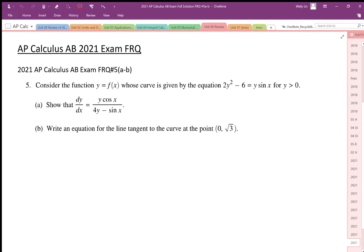Problem 5a from the 2021 exam says consider the function y equals f of x whose curve is given by the equation 2y squared minus 6 equals y sine x for y greater than 0.